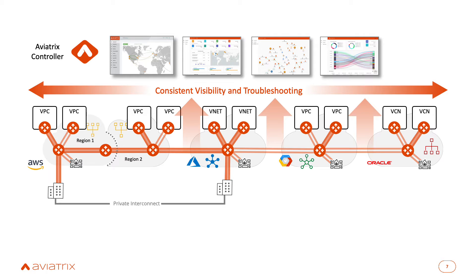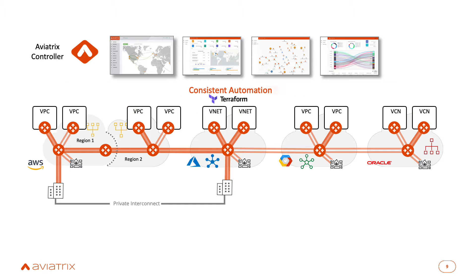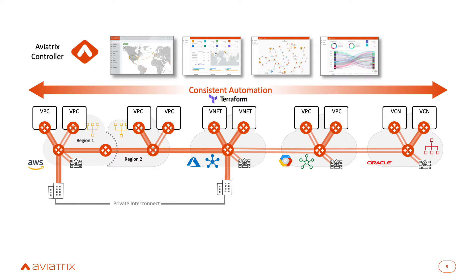What this gives you is consistent visibility and troubleshooting across all your cloud environments, consistent security across all your clouds, and consistent automation across all of your clouds. We have a single Terraform provider, so you can write one infrastructure-as-code module and it will work across all of your cloud platforms.